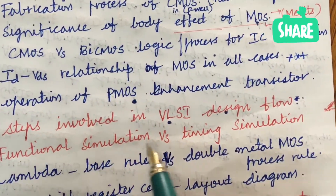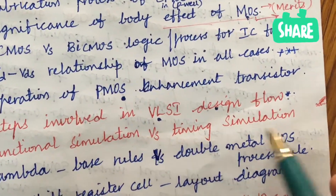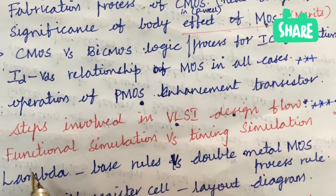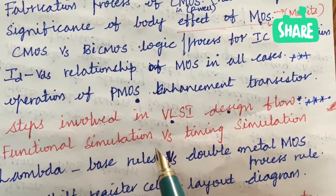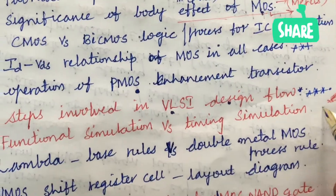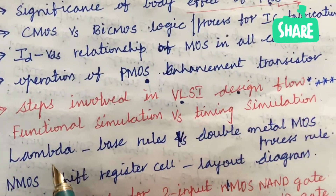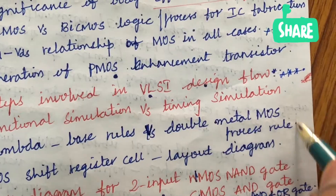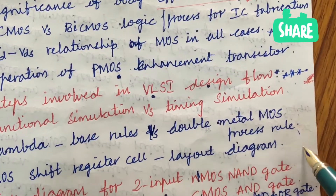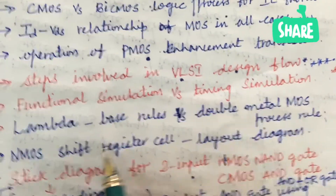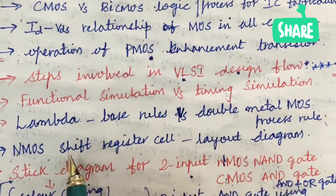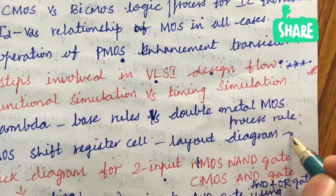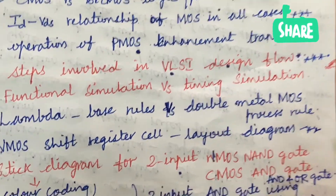The steps involved in VLSI design flow is also one of the very very important gunshot questions. Functional simulation versus timing simulation differences, lambda-based rules versus double-metal MOS process rules — from these concepts we can expect one question for sure. The NMOS shift register cell layout diagram is also one of the very very important questions.